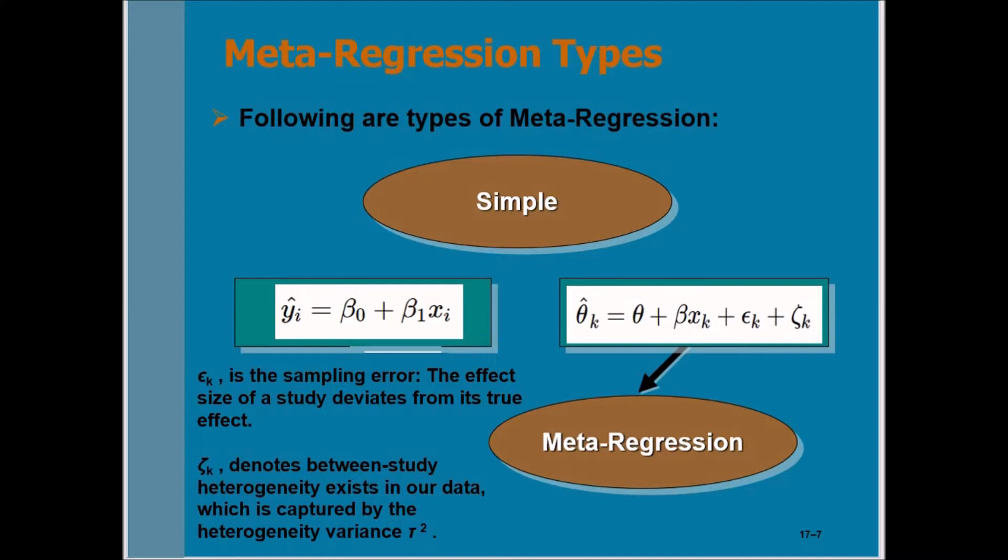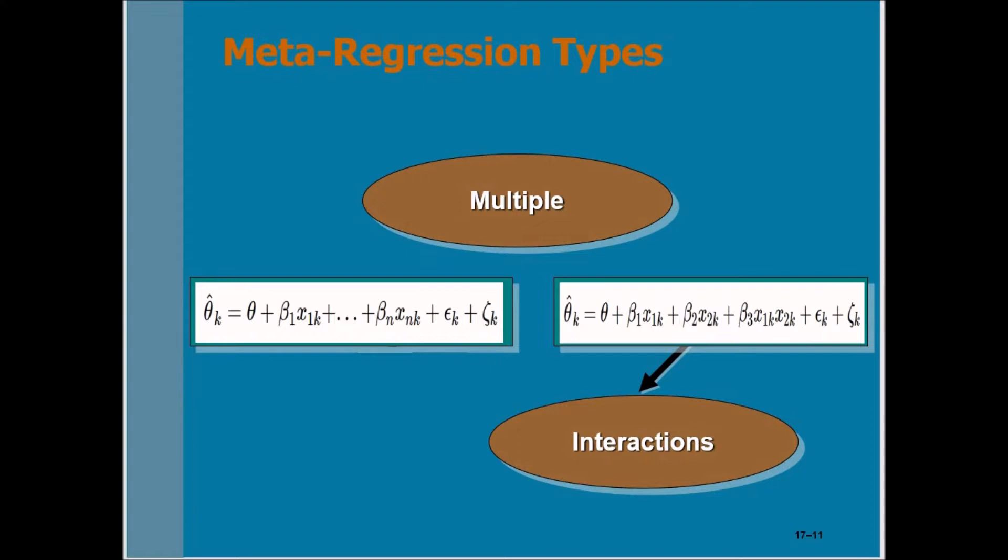In multiple meta-regression, you can use more than one independent variable. In this equation, theta-hat equals theta plus beta_1 x_1 plus beta_n x_n plus epsilon plus zeta. You can use multiple independent variables x_1, x_2, x_3, and so on. An important aspect of multiple meta-regression analysis is that you can test the interaction among variables. Theta-hat equals theta plus beta_1 x_1 plus beta_2 x_2 plus beta_3 x_1 times x_2 plus epsilon plus zeta. Here, beta_3 is the parameter for the interaction between x_1 and x_2.